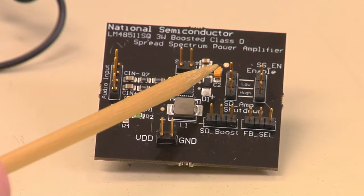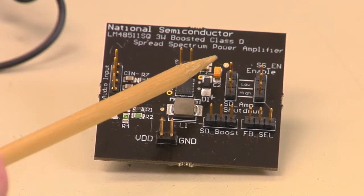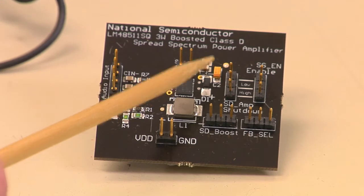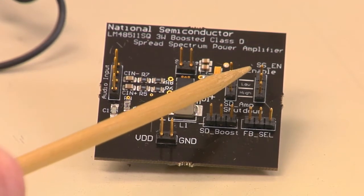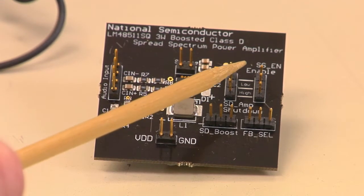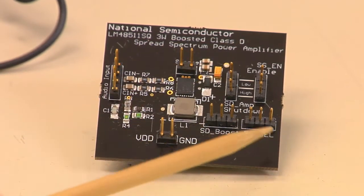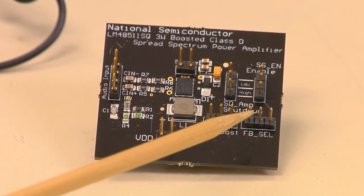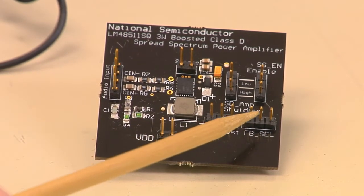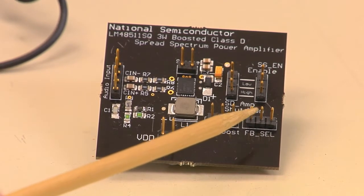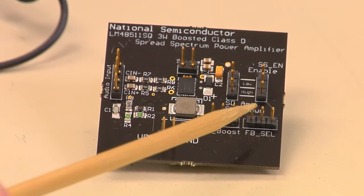The Class D shutdown is done up here, which you can go high or low with this jumper. This jumper over here will put it in the low EMI spread spectrum mode, and this jumper here, which we'll demo later, will put it in the high or low feedback, which will give you two different output voltages for the Boost Converter.